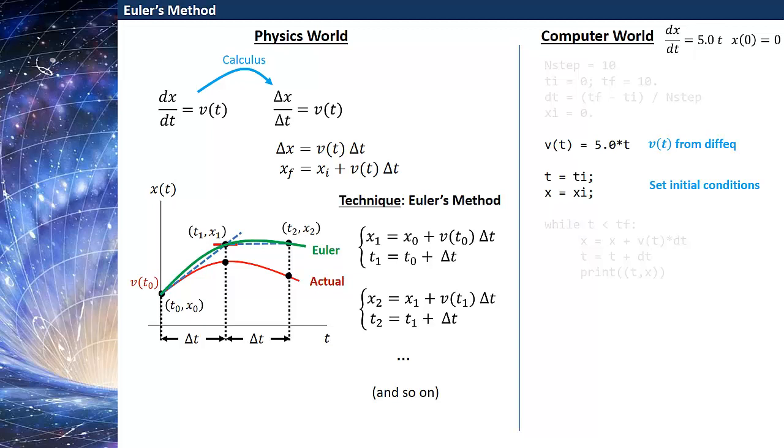And then I'm just going to have a separate set of lines here to set my initial conditions, so t is equal to ti and x is equal to xi. So this is starting my code essentially.